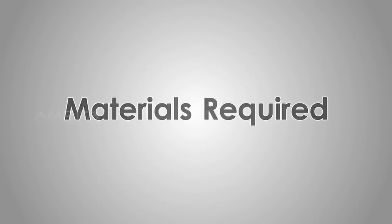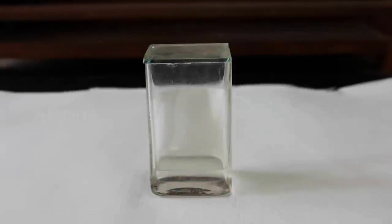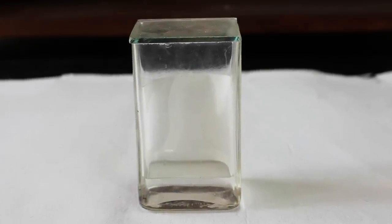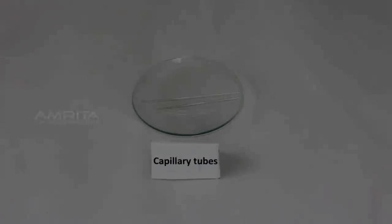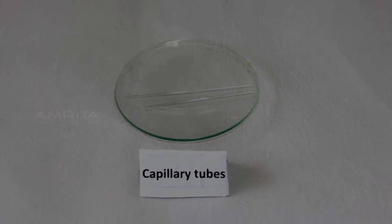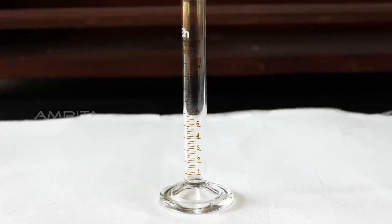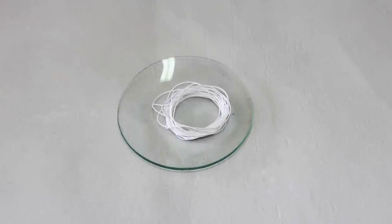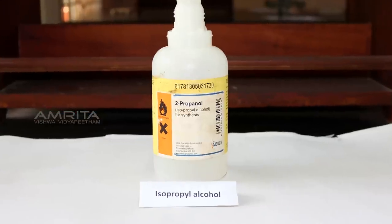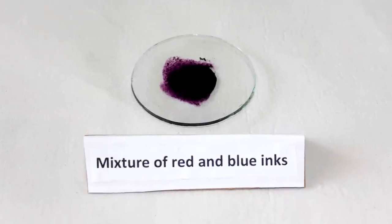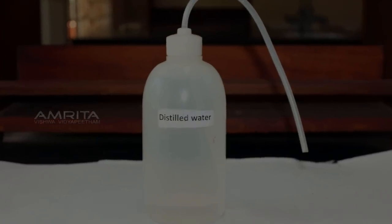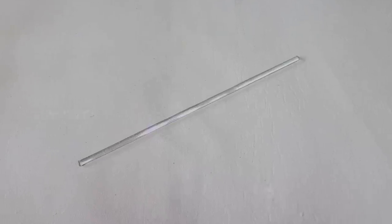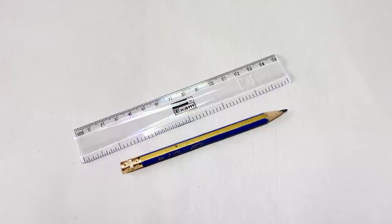Materials required: chromatographic chamber, Whatman filter paper strip, capillary tubes, measuring cylinder, thread, isopropyl alcohol, mixture of red and blue inks, distilled water, glass rod, scale, and pencil.